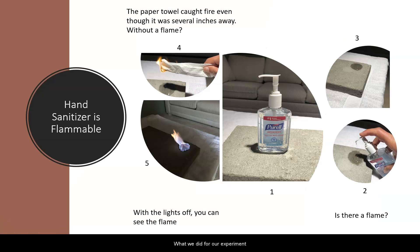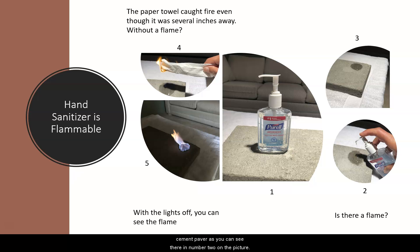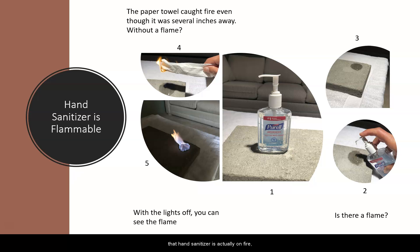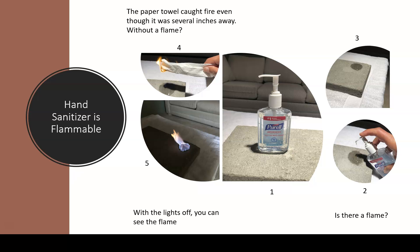For our experiment, we took a bottle of regular hand sanitizer and spread some out on a cement paver — as you can see in picture number 2. Then we lit it on fire, and in picture number 3 on the right-hand side, that hand sanitizer is actually on fire. But you can't see the flame, can it? It doesn't appear to be there. So what we did is take a paper towel and held it about 4 to 5 inches above the hand sanitizer, and as you can see in picture number 4, it lit on fire.